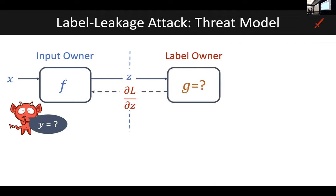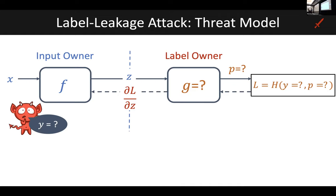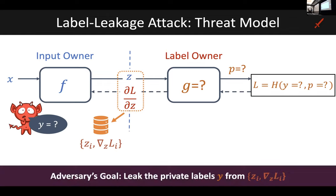The things that are unknown include: the label owner's model G — both its parameters and architecture — the predictions made by this model, and of course the private labels corresponding to each input. The only known entities are the embedding Z that was transmitted and the gradient of the loss with respect to the embedding for each input. The goal of the attacker is to use this embedding and gradient information to somehow uncover the private labels corresponding to each input.